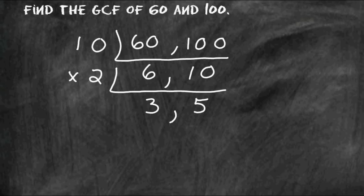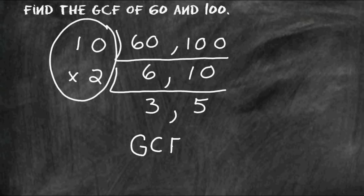When the two numbers that you have at the bottom only share the number 1 as their only common factor, take all of the numbers that you have written in this left-hand column and multiply them together, and that will give you the GCF. In this case, our GCF of 60 and 100 is equal to 20.